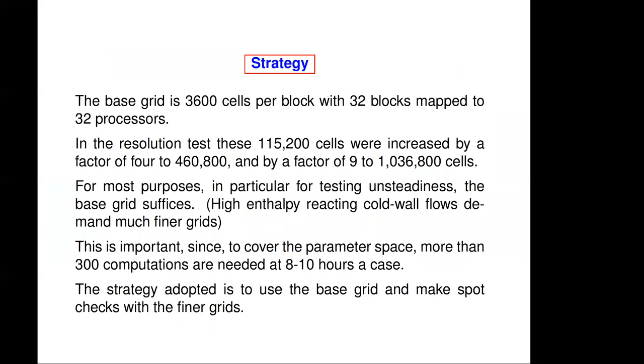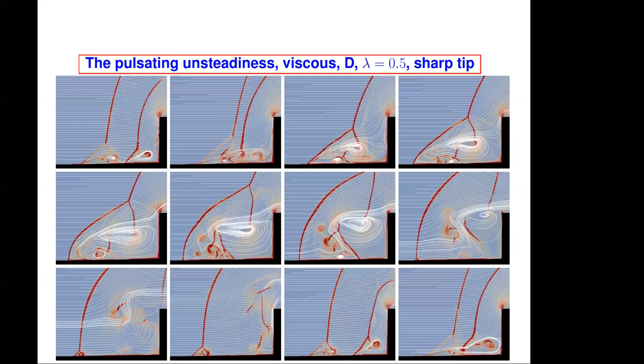So what's my strategy? The base grid is 3600 cells per block with 32 blocks, and the resolution test, we change these 115,000 cells to a half a million and also to a million. For most purposes, in particular for our test of unsteadiness, this is okay. I know that in high enthalpy reacting cold wall flows with also species diffusion and all that stuff, you need much finer grids. So this fact that we can get away with this base grid is important, since in order to cover this space, I need 300 computations and each takes about 10 hours. So the strategy is to use the base grid and make spot checks with the finer grids.